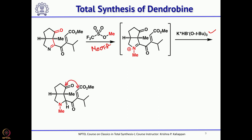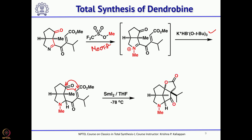What is left is to introduce a methyl group on nitrogen and also reduce the imine. Methylation of nitrogen was done with methyl triflate, and in-situ reduction of the iminium ion was done with potassium tri-tert-butoxyborohydride. Potassium tri-tert-butoxyborohydride is a bulky reagent known to reduce iminium ions in the presence of ketones and esters. Now two 5-membered rings are done, and he needs to connect them. He thought he could use samarium iodide - a well-known one-electron donor - to form a ketone radical that attacks the double bond in a Michael fashion to form the 6-membered ring.